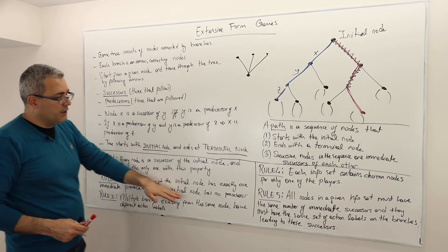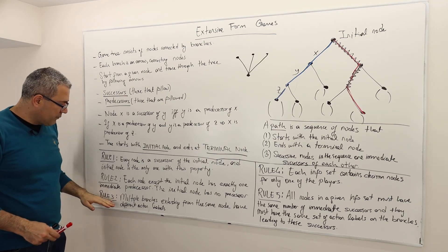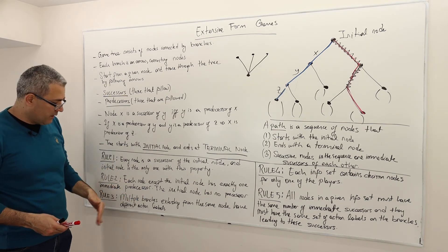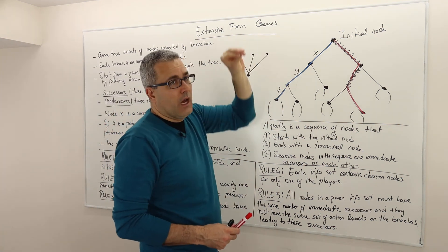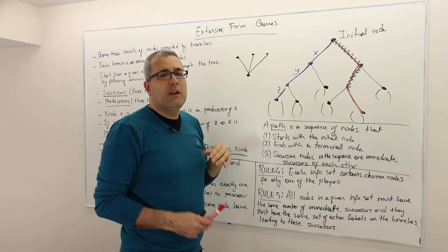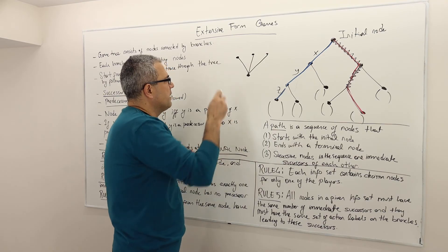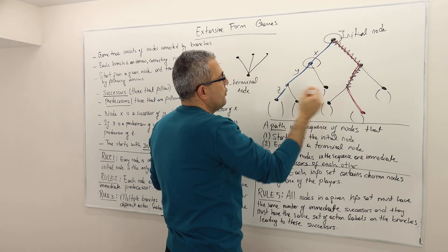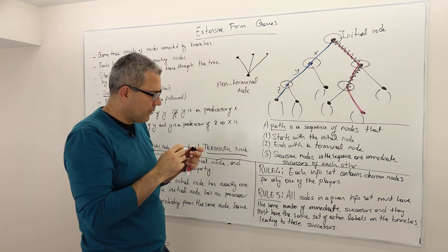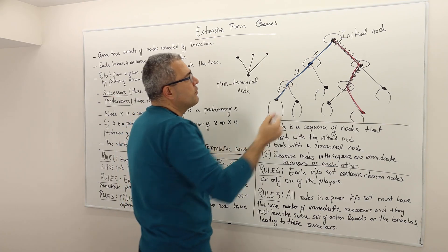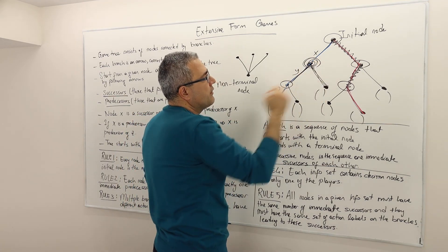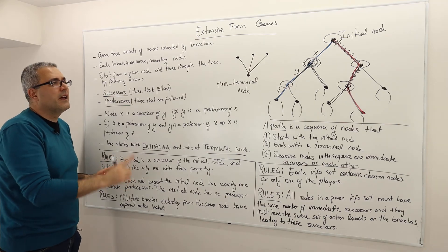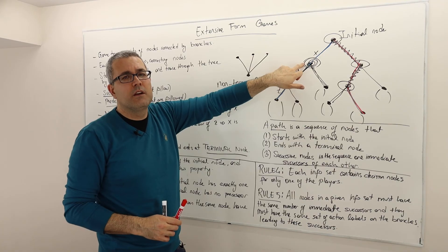Rule number three says multiple branches extending from the same node have different action labels. If a node is not a terminal node, we call it a non-terminal node. In this game we have five non-terminal nodes. For any non-terminal node there will be a bunch of branches — for example, this node has two branches, this one also has two branches. Those branches tell us the different actions available for the player to select.